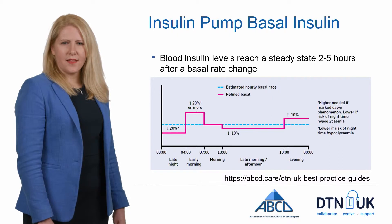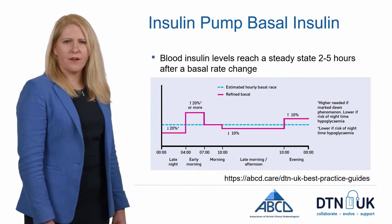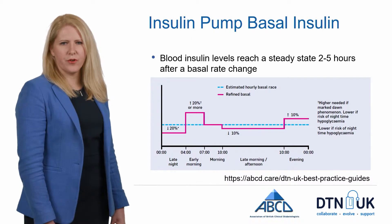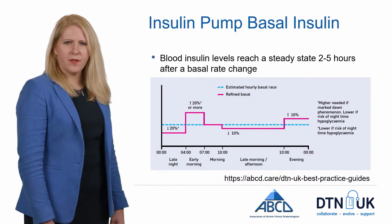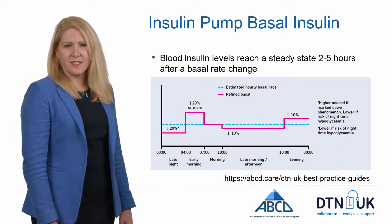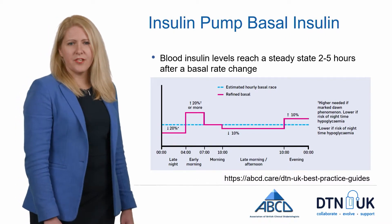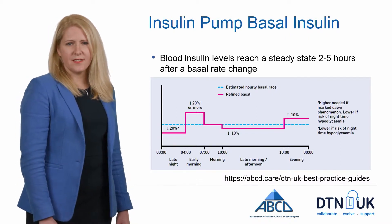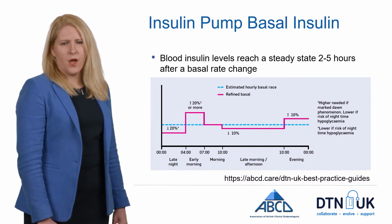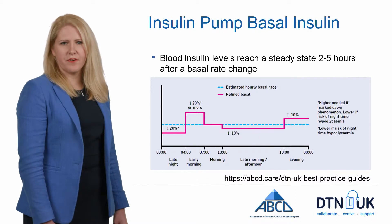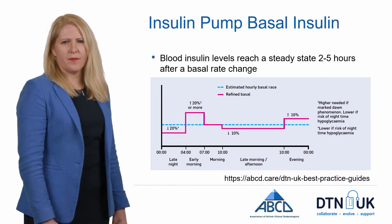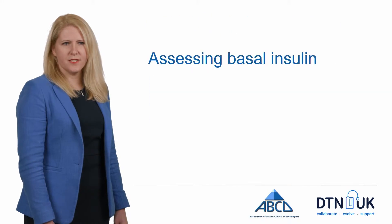Overnight, a slightly lower basal rate, and in the early hours of the morning, a higher basal rate to counteract the dawn phenomenon. Then typically people need slightly less during the afternoon. But like everything with type 1 diabetes, it's very individual and you need to find the right settings for you. When you make a change in your basal rate, it can typically take around two to five hours to have effect, and we need to build that into the programming of new basal rates when a change is needed.